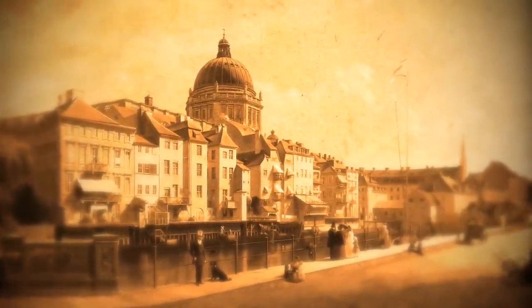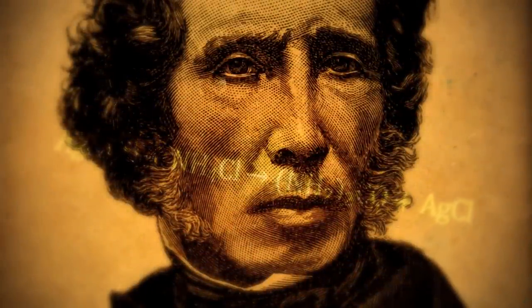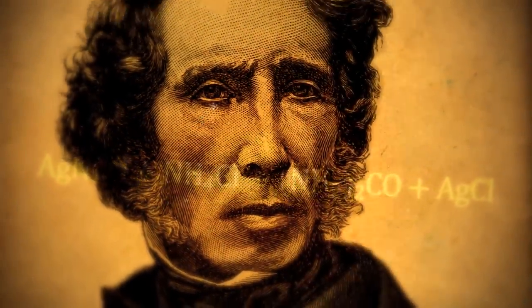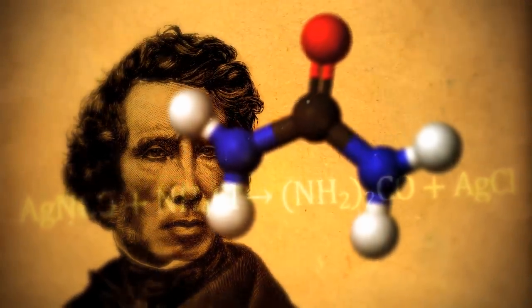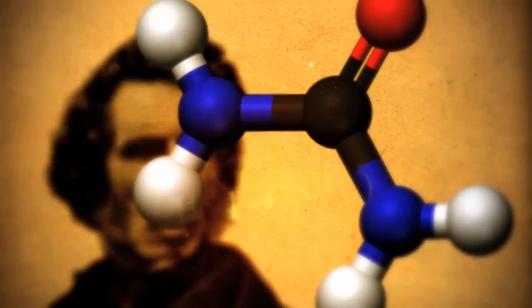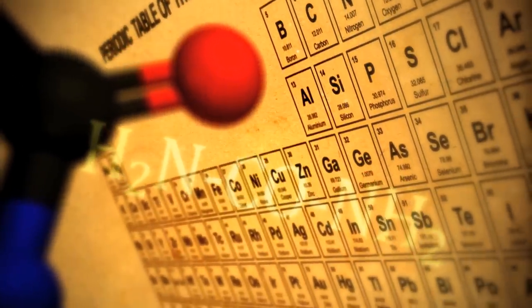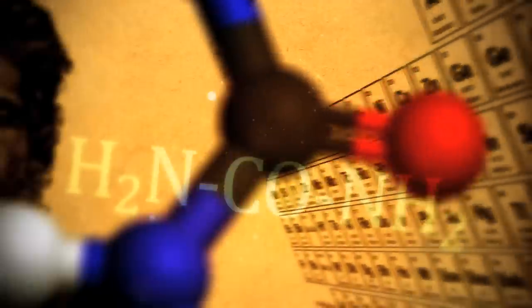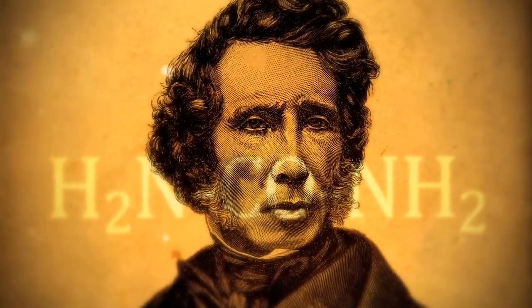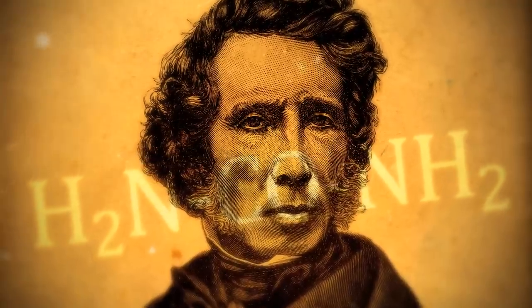In 1828, the German chemist Friedrich Wöhler obtained urea by treating silver isocyanate with ammonium chloride. This represented the first time that an organic compound was artificially synthesized without the involvement of living organisms. For this discovery, Wöhler is considered by many to be the father of organic chemistry.